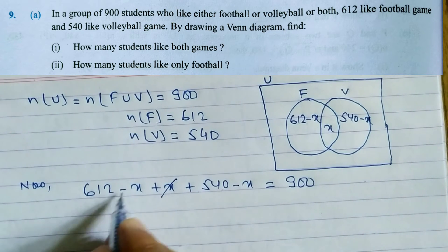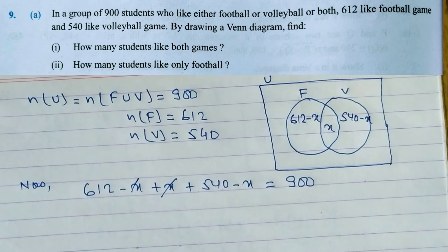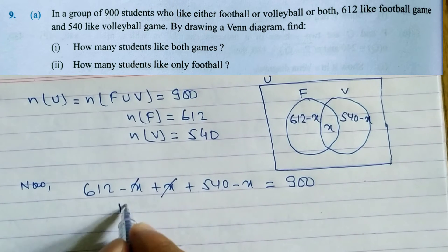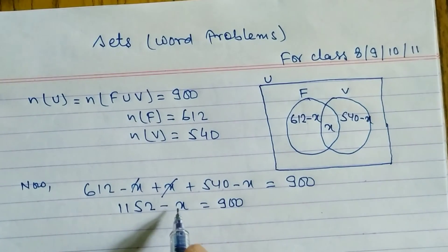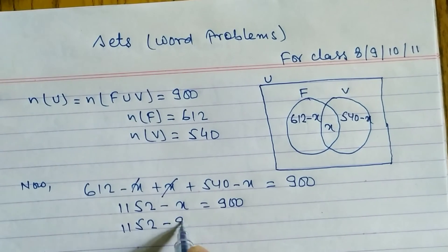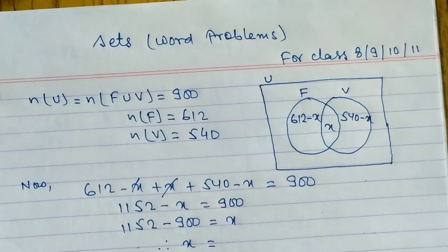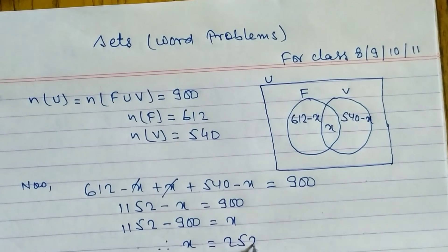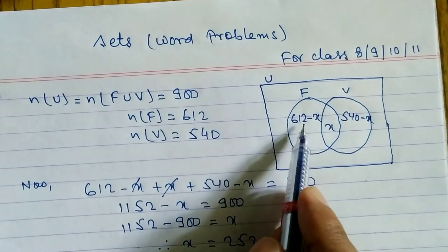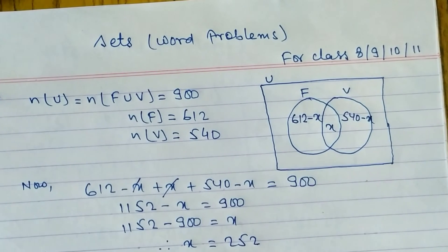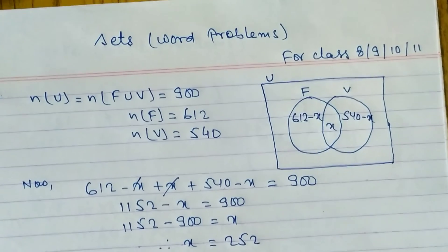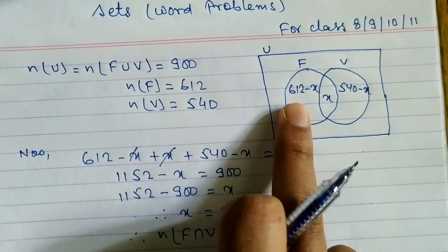The X and X cancel — one positive, one negative. Now we add 612 plus 540 to get 1152, so 1152 minus X equals 900. Taking X to the right side: X equals 1152 minus 900, which gives us 252. So F intersection V equals 252, meaning 252 students like both football and volleyball.